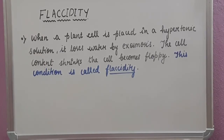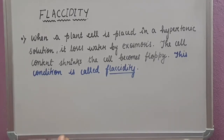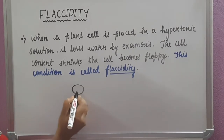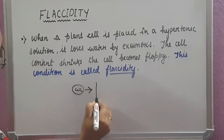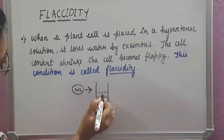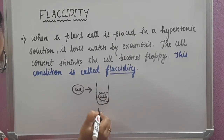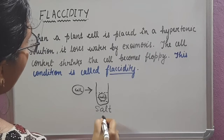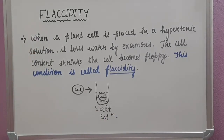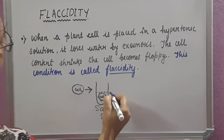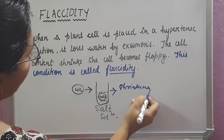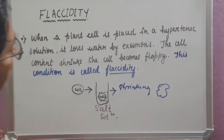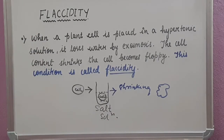The next term to be discussed is flaccidity — also a term from plant physiology. Flaccidity means when a cell is put into a hypertonic solution, such as a salt solution or a sugar solution, it starts shrinking. This condition is called flaccidity.